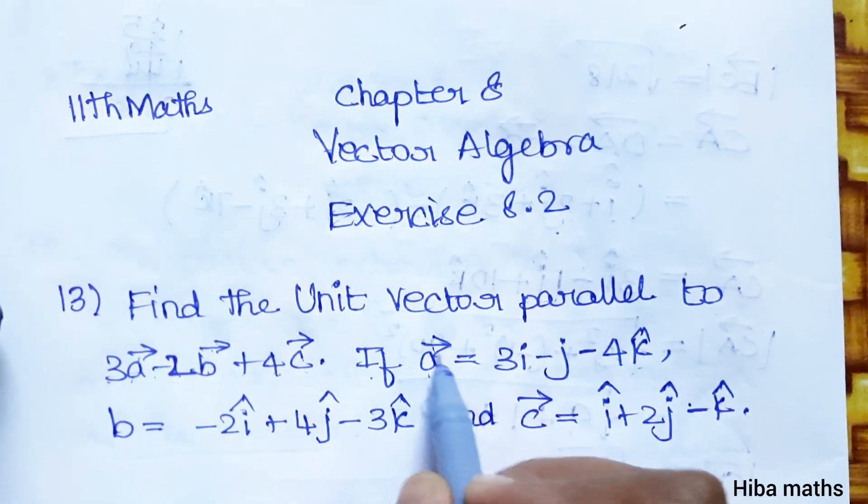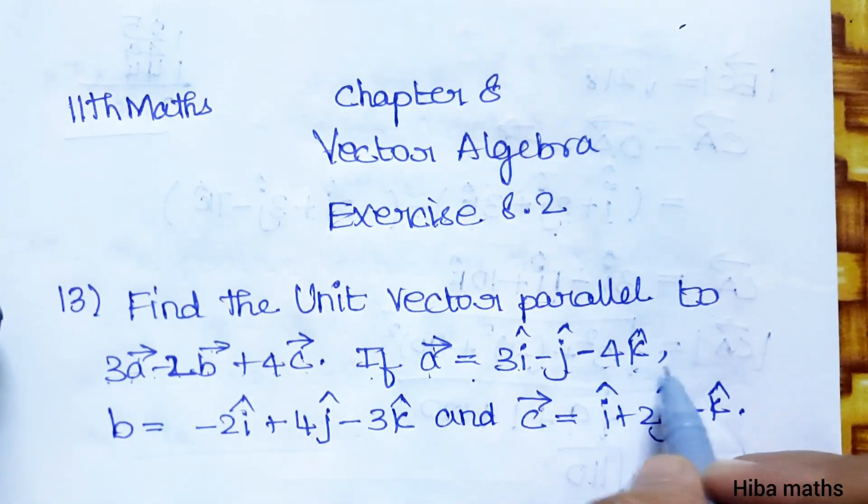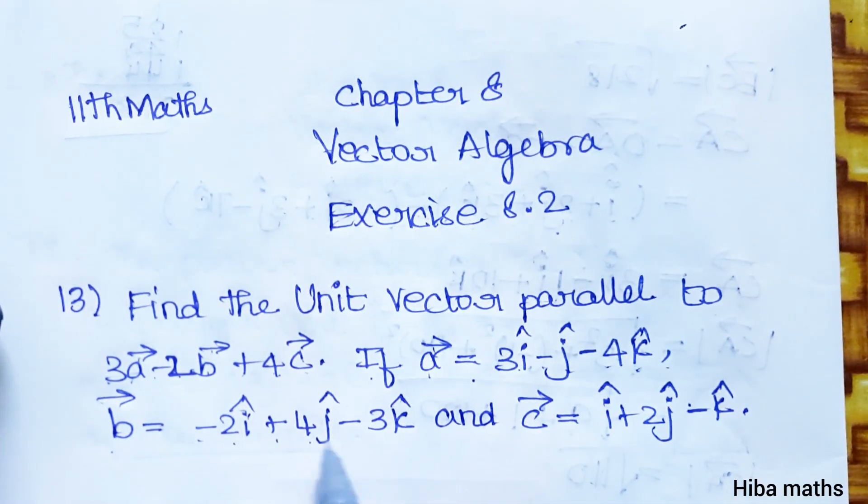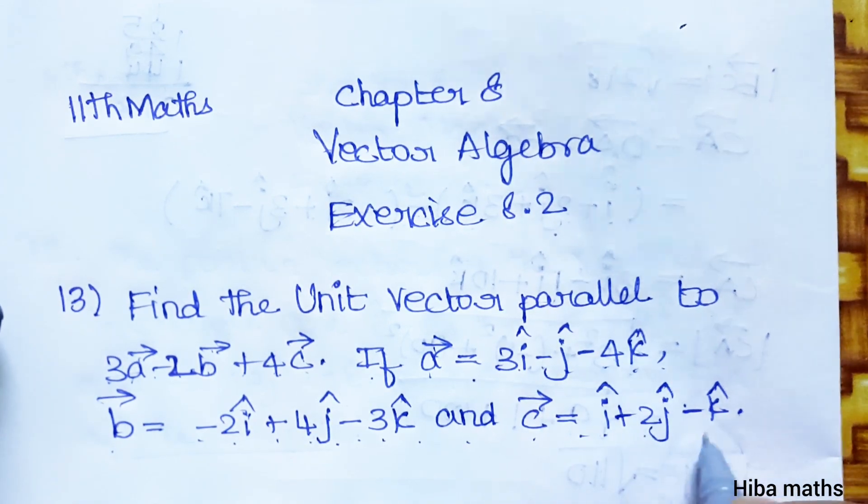If A vector is equal to 3i minus j minus 4k, B vector is equal to minus 2i plus 4j minus 3k, and C vector is equal to i plus 2j minus k.